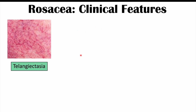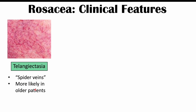The first skin finding I want to talk about is telangiectasia. Telangiectasia is simply the medical term for spider veins. You can see these spider veins on the face. They are more likely to occur in older patients, so there is a predilection for this particular skin finding in older patients.